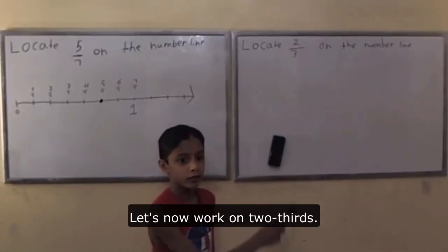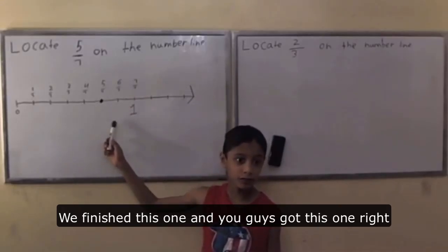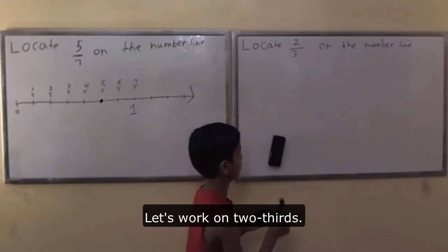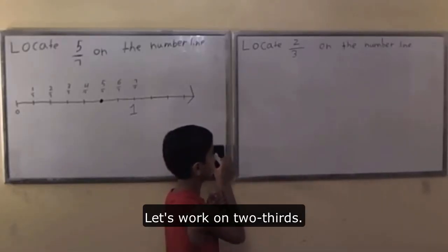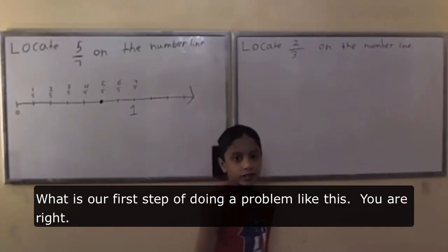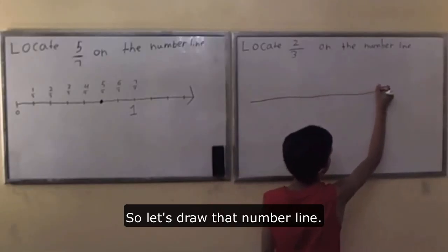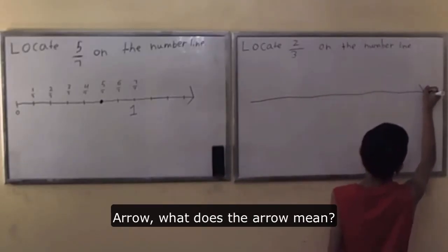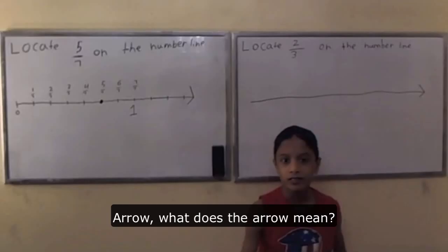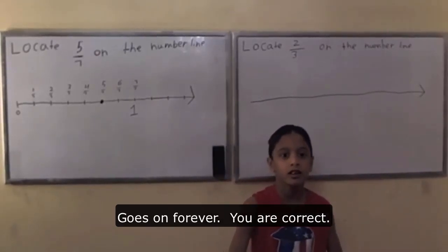So let's now work on 2/3. We finished this one and you guys got this one right. Now let's work on 2/3. What is our first step of doing a problem like this? You're right, a number line. So let's draw that number line with an arrow. What does the arrow mean? Goes on forever. You are correct.